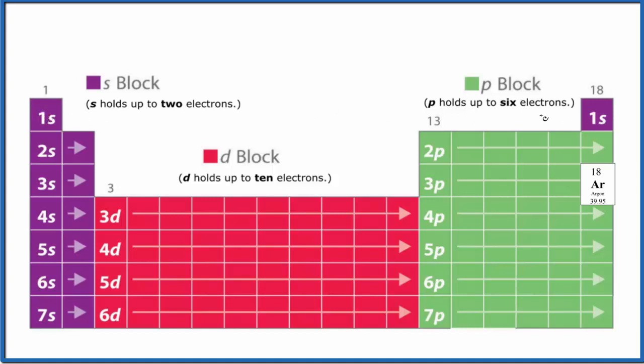We'll start with 1s¹, 1s². Then we go to the second energy level, 2s¹, 2s². We go over to 2p: 1, 2, 3, 4, 5, 6. 2p holds up to 6 electrons.